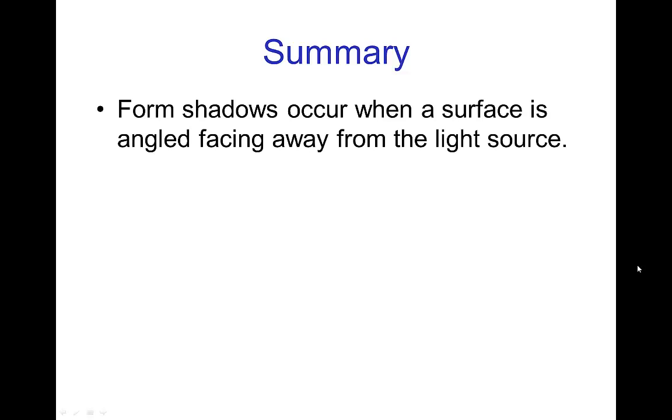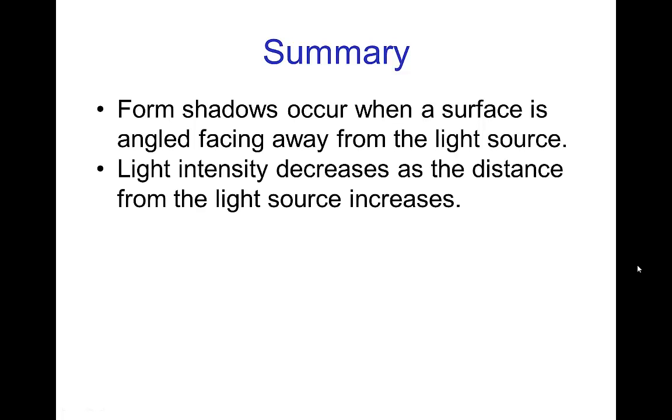So in summary, form shadows occur when a surface is angled away from the light source. Light intensity decreases as the distance from the light source increases, so we have both this effect of angle and distance.